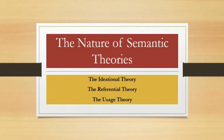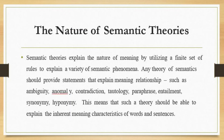Bismillahirrahmanirrahim. Assalamualaikum, dears. In this video we will be discussing the nature of semantic theories and three semantic theories: the ideational theory, the referential theory, and the usage theory. Semantic theories explain the nature of meaning by utilizing a finite set of rules to explain a variety of semantic phenomena. Any theory of semantics should provide statements that explain meaning relationships such as ambiguity, anomaly, contradiction, tautology, paraphrase, entailments, synonymy, hyponymy, and others.